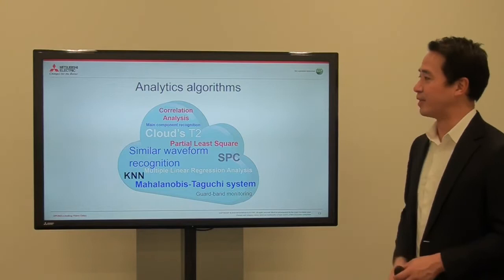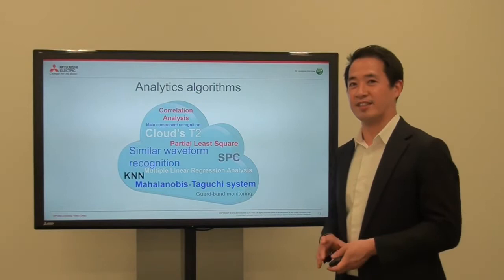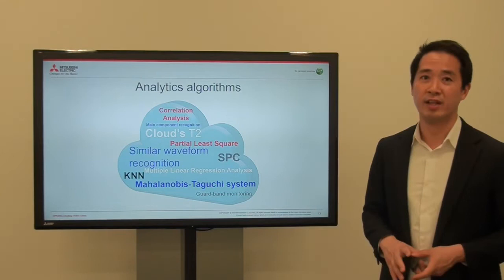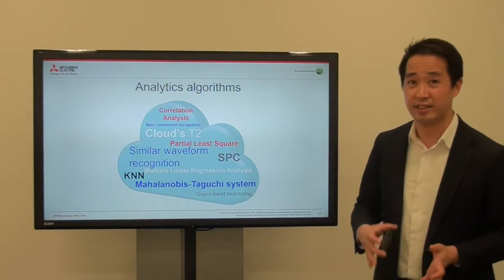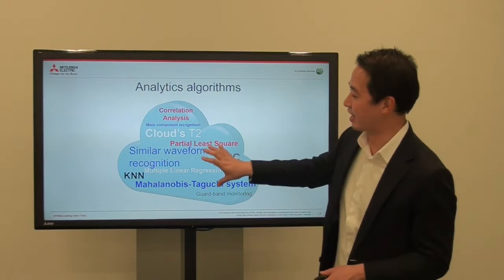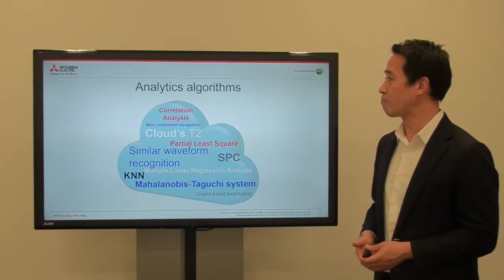Then you select the analytics algorithm necessary. This is where you should involve somebody who is good at statistics, because the method you will select — and there are various methods — will depend on the kind of data, the type of data, and the variance of data you have. If you're collecting waveform data, it makes sense to use waveform recognition methods. Other methods would depend on whether it's fluctuating data or whether there are many different types of data. You would select the most relevant analytics method to do your data analytics.